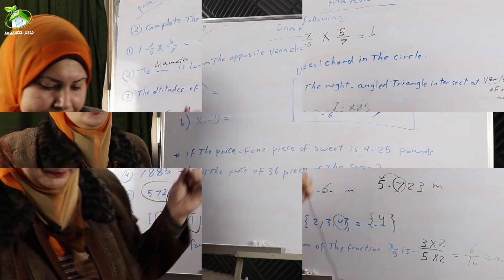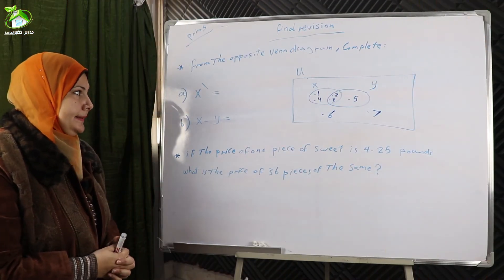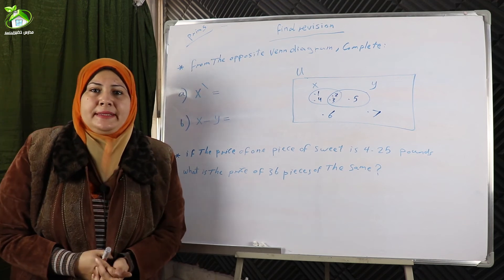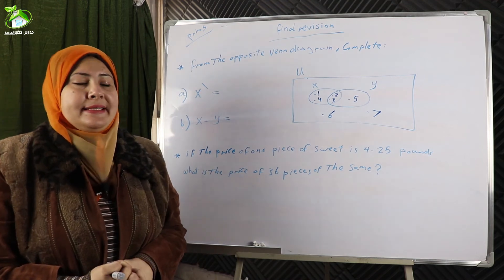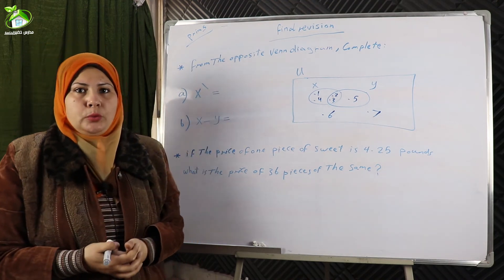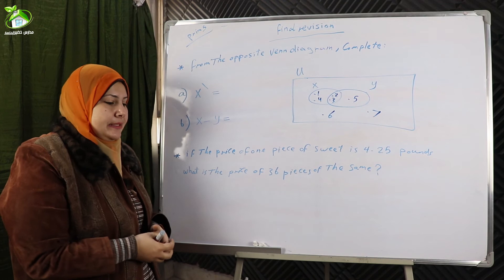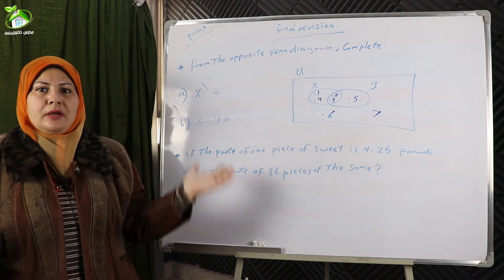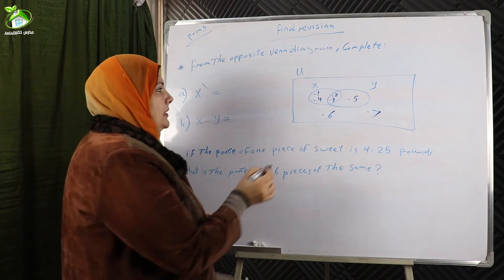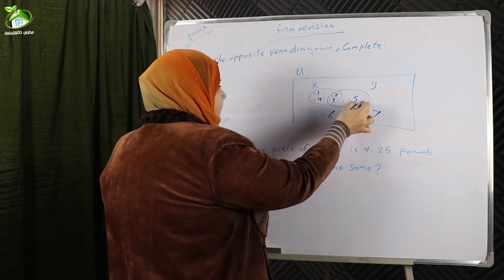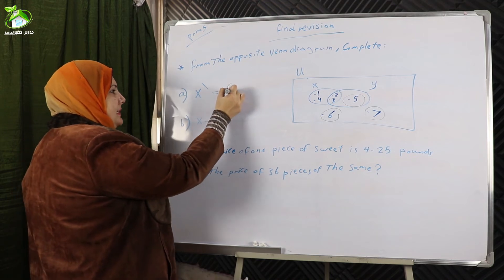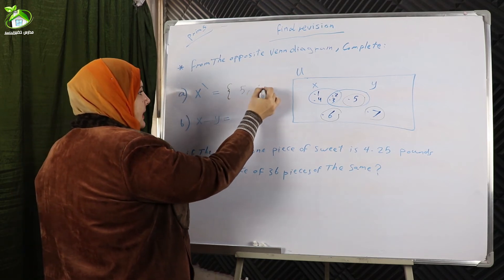Another exercise — from the Venn diagram, complete the following. X complement means the elements belonging to U and not belonging to X — the elements outside X. Outside X we have five, six, and seven. So X complement equals the set {5, 6, 7}.